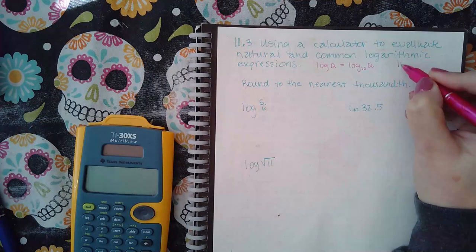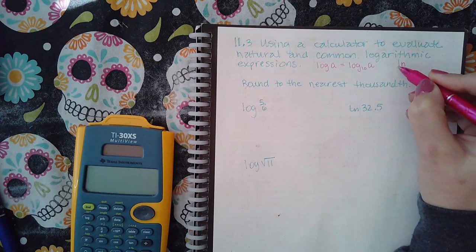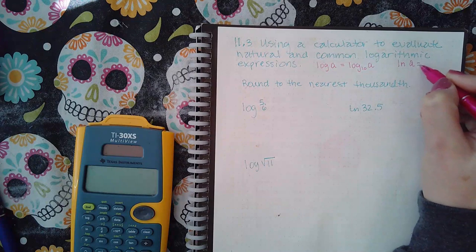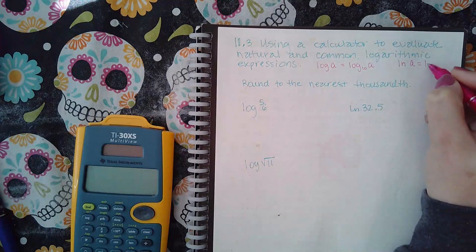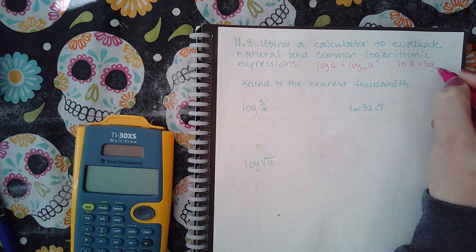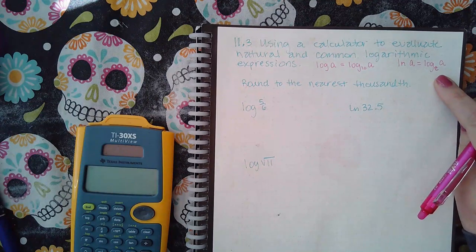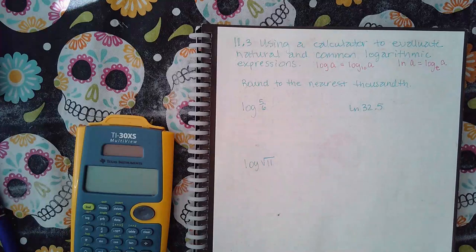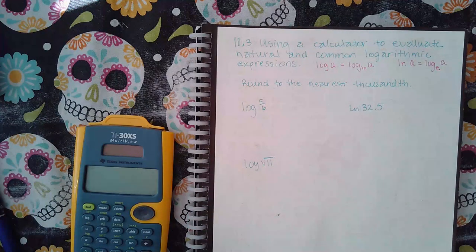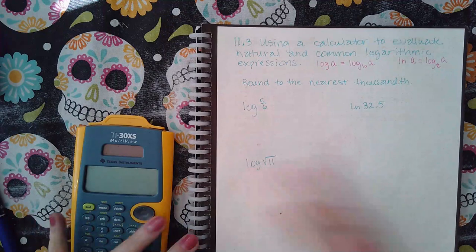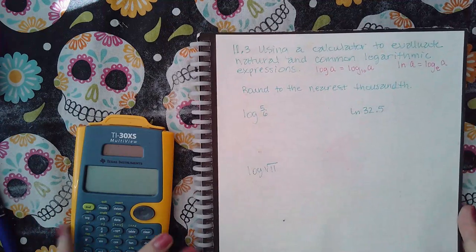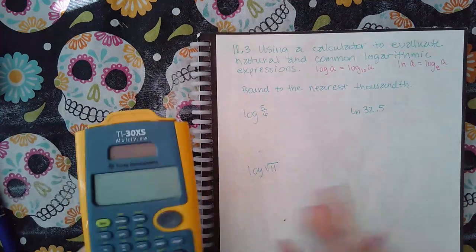You also have another one. If you see ln, it means natural logarithm of an argument, which means log base e. And e is a number kind of like pi, right? Pi is 3.14, e is 2.78. It's more precise than just 2.78, but that's the rounded version of e, just like 3.14 is the rounded version of pi.